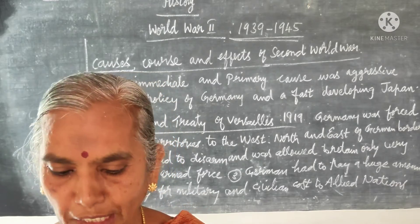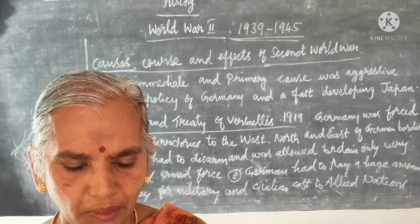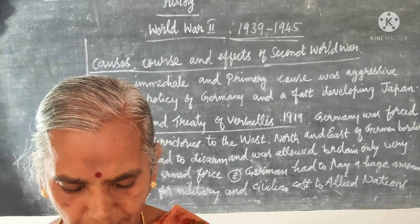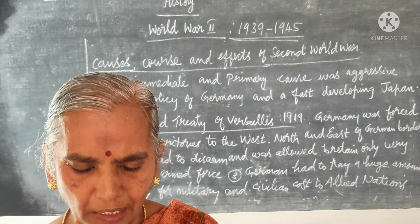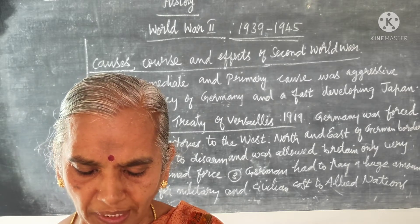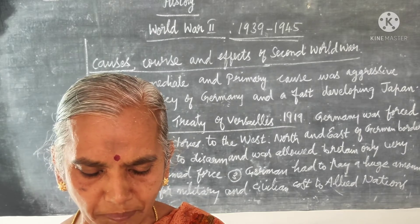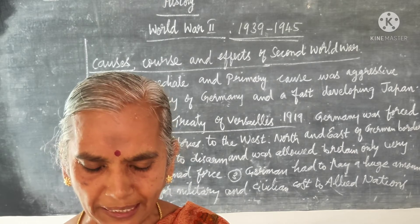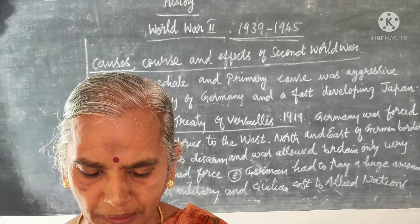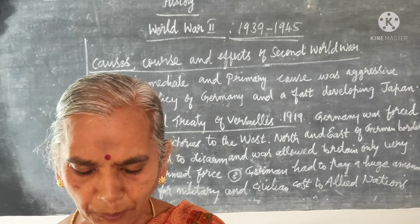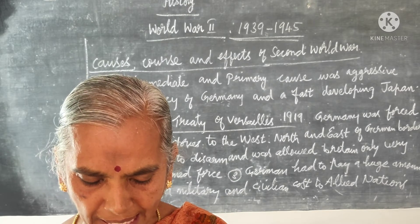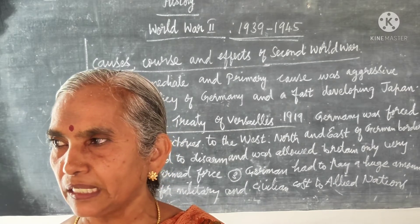The Battle of Stalingrad lasted from 17th July 1942 to 2nd February 1943. In August 1942, the Germans attacked Stalingrad. Operation began on June 28, 1942, with significant German victories. Russian people suffered from bad working and living conditions as well as ill-treatment in occupied areas. There were about 15 million civilian deaths and almost 10 million armed forces members were killed. Yet the people of Stalingrad remained loyal to the government and successfully defended the city.